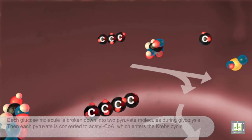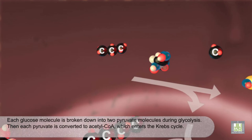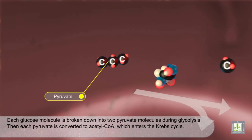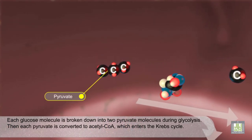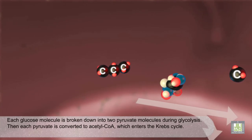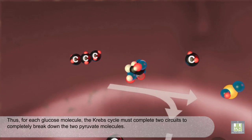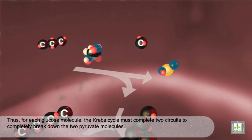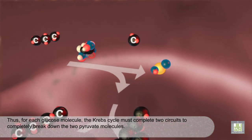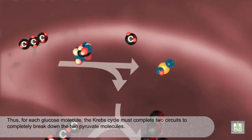Each glucose molecule is broken down into two pyruvate molecules during glycolysis. Then, each pyruvate is converted to acetyl-CoA, which enters the Krebs cycle. Thus, for each glucose molecule, the Krebs cycle must complete two circuits to completely break down the two pyruvate molecules.